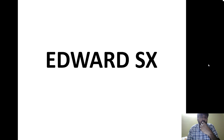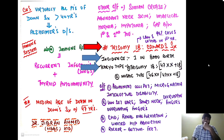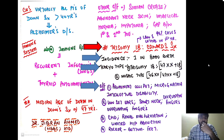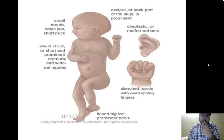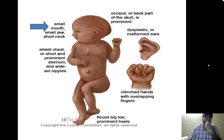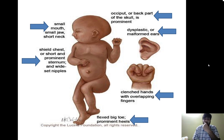Edwards syndrome is trisomy 18 with an incidence of 1 in 8,000 births. Karyotype is 47XX+18 or a mosaic type (46XX with 47XX+18). Clinical features include prominent occiput, micrognathia (small jaws), intellectual disability, low-set ears, short neck, overlapping fingers with clenched hands, congenital heart defects, renal malformation, limited hip abduction, and the classic rocker-bottom feet. They also have a shield chest with widely spaced nipples.